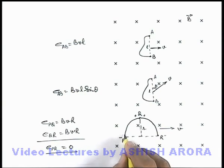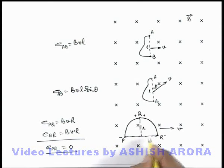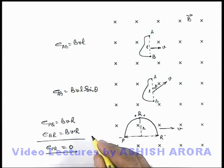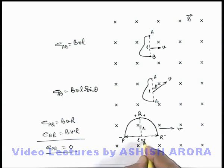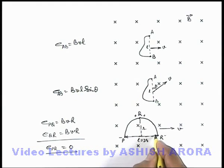Equivalently, the whole semicircular loop has its edge length equal to 2r moving parallel to itself. Corresponding to the logic discussed previously, since the length l = 2r is moving parallel to itself, it will not cut any magnetic flux effectively, so no EMF is induced across the ends P and R.